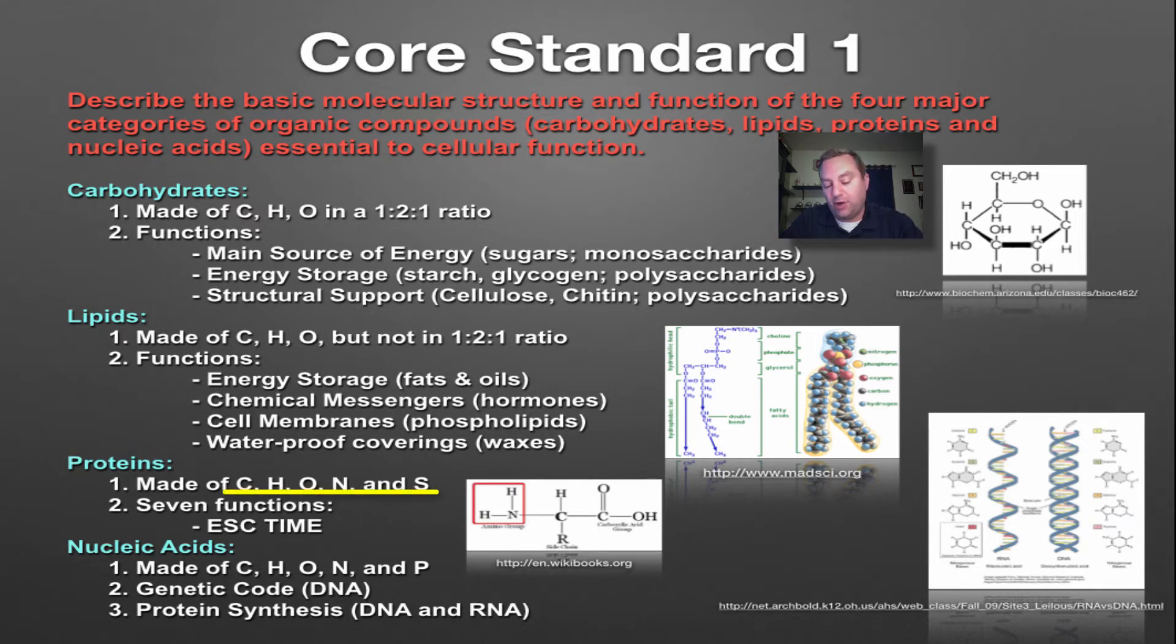Proteins are made up of carbon, hydrogen, oxygen, nitrogen, and sulfur, and they have seven functions called ESCAPE TIME, and we're going to cover that later. As you can see in this picture here, this is the primary structure of an amino acid, and we're going to revisit that a little bit.